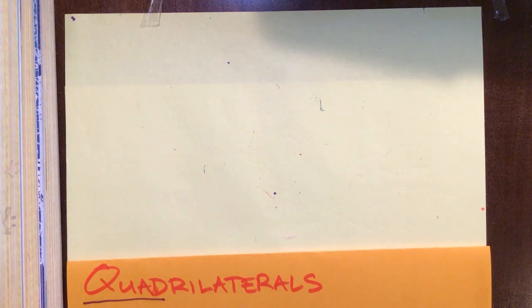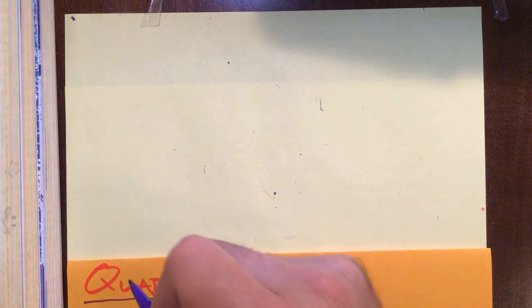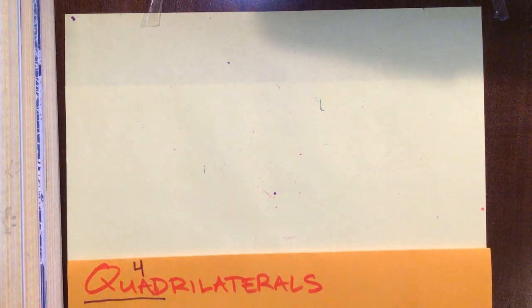All right, we got ourselves some quadrilaterals here. Let's check this out. Quad actually means four, like quad wheeler four wheeling.